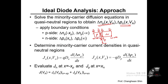Step number two was to determine the minority carrier current densities in the quasi-neutral regions. The quasi-neutral region corresponds to the p-side and n-side regions outside the depletion layer. Since almost zero electric field exists in the quasi-neutral region, the current component there is only diffusion current density — written as the unit charge times diffusivity times the carrier concentration gradient.